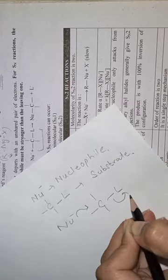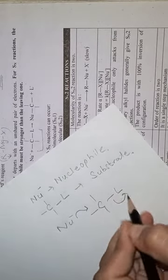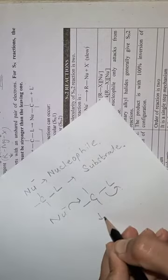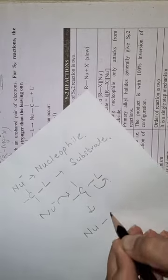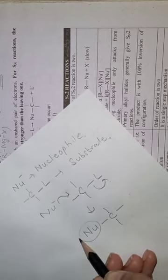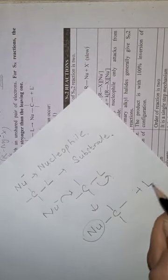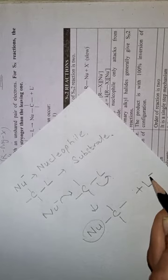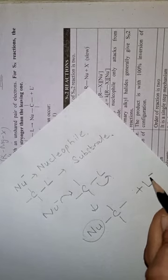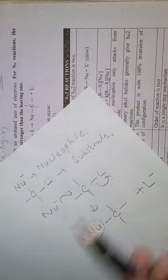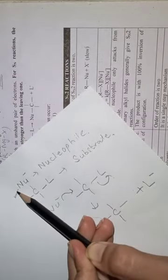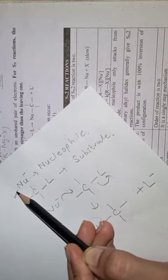The leaving group is going to leave with an unshared pair of electrons, and what we will get — we will get a target molecule, or the product — in which the nucleophile is substituted and the leaving group has departed or left with an unshared pair of electrons. This is basically the mechanism of nucleophilic substitution reaction.